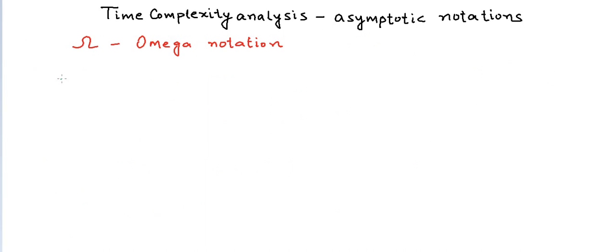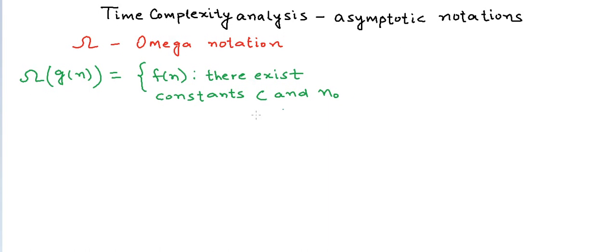This notation is called Omega notation. The definition is: if we have a positive function g(n) that takes positive argument n, then Ω(g(n)) is defined as the set of all functions f(n) such that there exist constants c and n₀ for which c·g(n) ≤ f(n) for all n ≥ n₀.